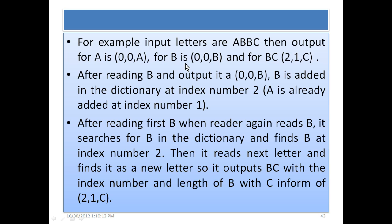For B, the same thing applies. No other letter is associated or grouped with B, and B is also not in the dictionary. So 0 is the index number, meaning there is no value to be searched in the dictionary, and the length is 0 as well. After reading B and outputting it as (0, 0, B), B is added into the dictionary at index number 2. The reason it is added at index number 2 is that index number 1 already has A.